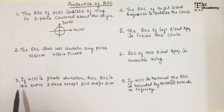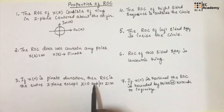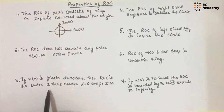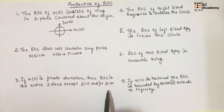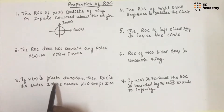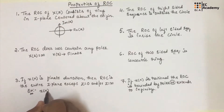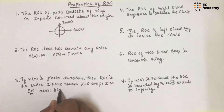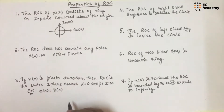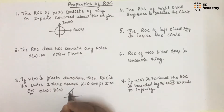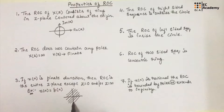The next property is if X(n) is finite duration, then the ROC is the entire Z-plane except for Z equal to 0 and/or Z equal to infinity. For example, if you have X(n) equal to delta of n, this sequence is finite duration, so the ROC or region of convergence will be the entire Z-plane.